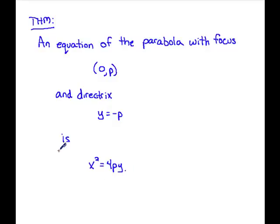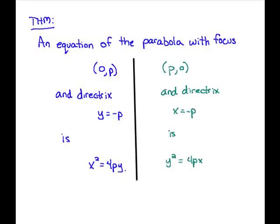And there is a side theorem here. Essentially, it's just the case where we have a focus on the X axis at X equals P and Y equals zero, and then you have a directrix which is a vertical line at X equals negative P. Then the equation for the parabola is Y squared equals 4PX.